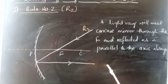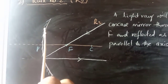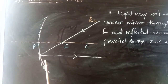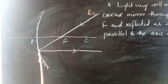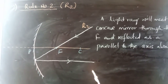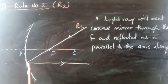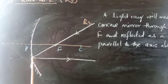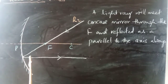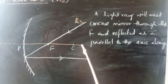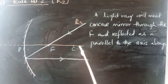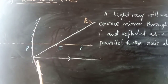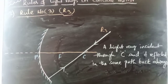Rule Number Two: an incident ray passing through the focal point, after reflecting off the concave mirror, will be reflected parallel to the principal axis. So a light ray meeting the concave mirror through the focal point F will reflect as parallel to the axis always. That is Rule Number Two.